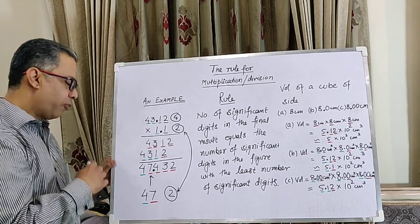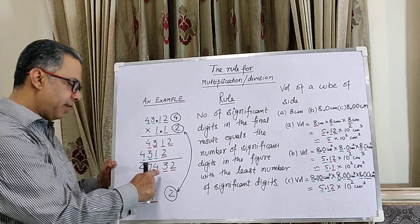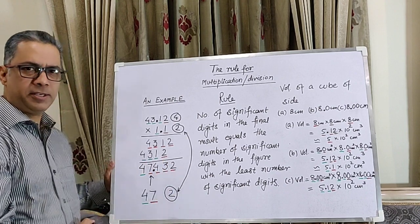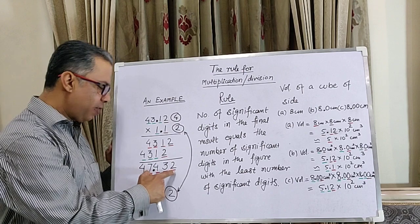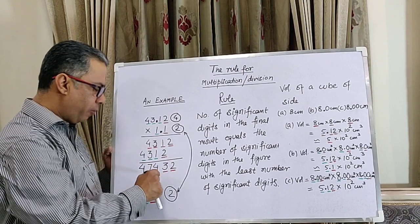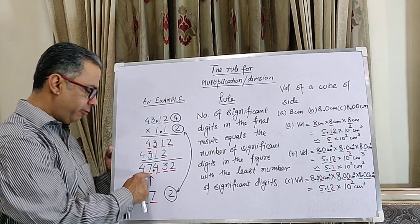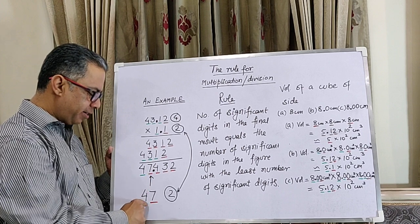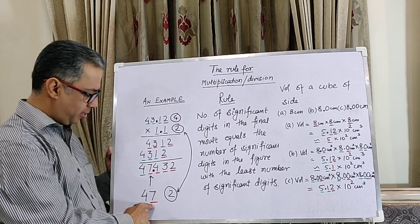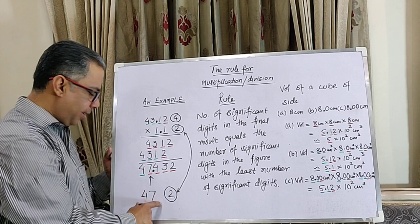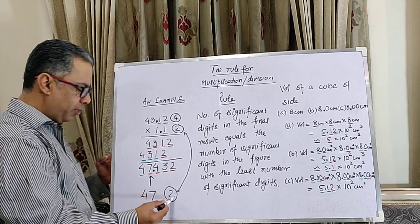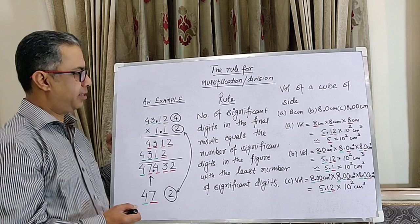And therefore, in our final result, we have lots of uncertain digits which we cannot afford to have. Therefore, what we do is round off so that the final result has only one uncertain digit. Here, the final result ends up with two significant digits.